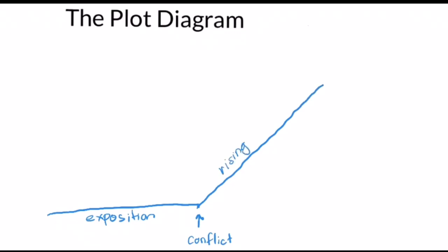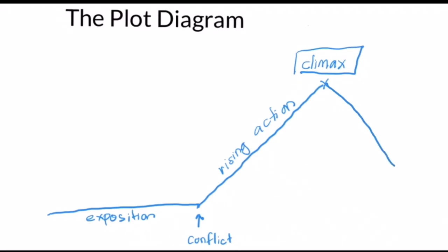The rising action consists of multiple moments of conflict faced by the protagonist. When the conflict reaches its highest peak, the climax comes in — this is the highest peak of the plot where the protagonist needs to make an important decision. Once the protagonist makes a decision during the climax stage, the falling action plot begins, represented by a line moving downward to reflect that the solution is about to be reached. This plot reveals the effects of the decision taken by the protagonist.